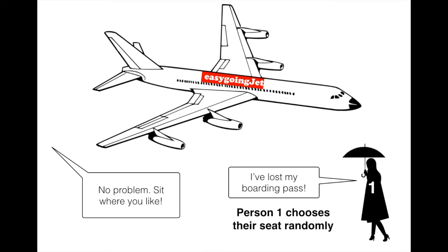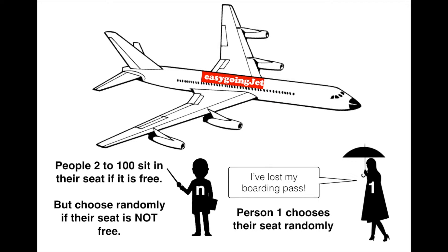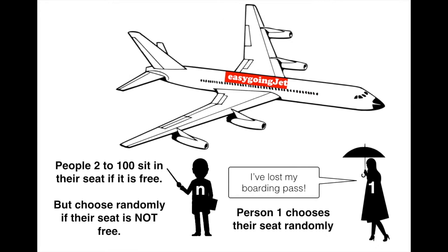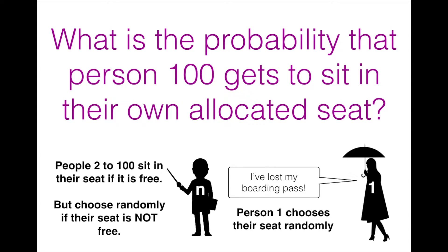Then passenger two gets on. They're much more organised, they've still got their boarding pass. So they go to their allocated seat and if it's free, they sit in it. But if it's not free — because person one is in it — then they also choose their seat randomly. And the same thing happens for person three: they sit in their seat if it's free, but if it's not free, they choose their seat randomly. And again, it's the same for all the passengers all the way up to passenger 100. The problem is: what's the probability that person 100 gets to sit in their own allocated seat?